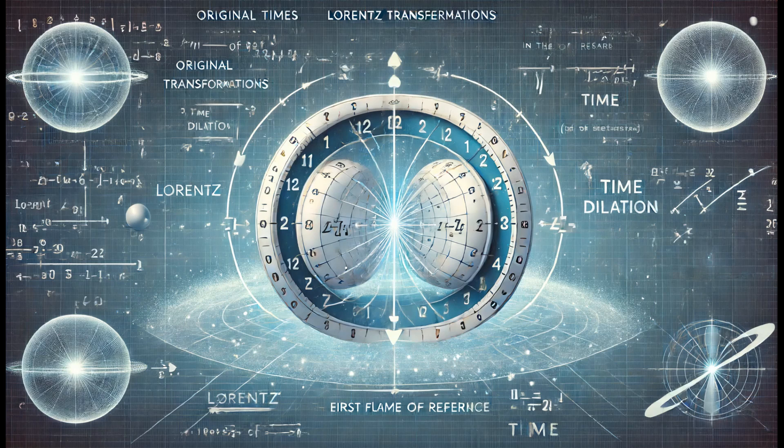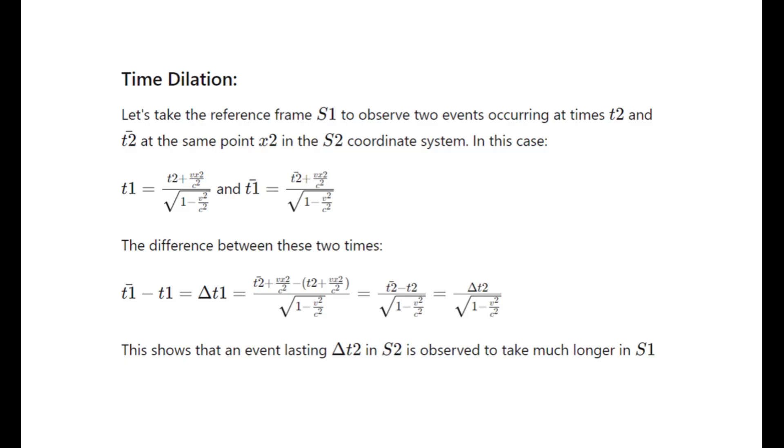To analyze this, we use Lorentz transformations, which allow us to transform the times of these events from the second frame of reference to the first frame of reference. These transformations take into account the relative speed and speed of light between the frames. After transforming the times of the events to the first frame of reference, we calculate the difference between these transformed times.